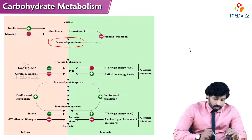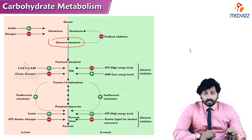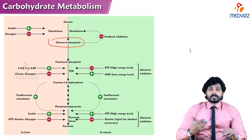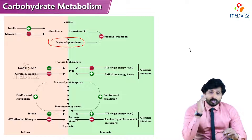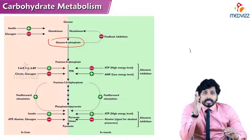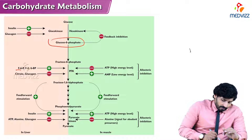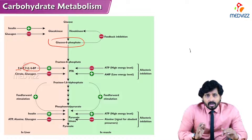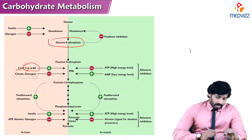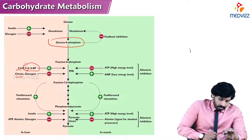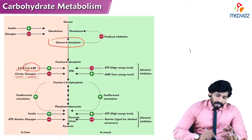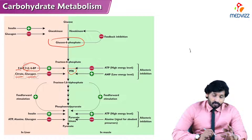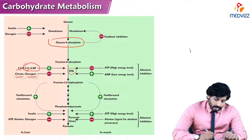At the third step, fructose-6-phosphate is converted to fructose-1,6-bisphosphate. The stimulators or promoters of this enzyme PFK1 are fructose-6-phosphate and fructose-2,6-bisphosphate, which are positive modulators. Citrate and glucagon are strong inhibitors of this step, and the enzyme phosphofructokinase is also inhibited by high levels of ATP.